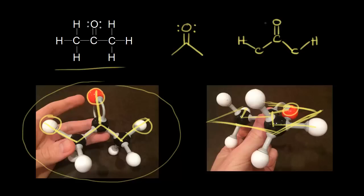We draw the oxygen in the plane of the page and put in lone pairs of electrons on the oxygen. Let's focus on the carbon in the center - the carbon in magenta is sp2 hybridized, so we would expect trigonal planar geometry around that carbon.